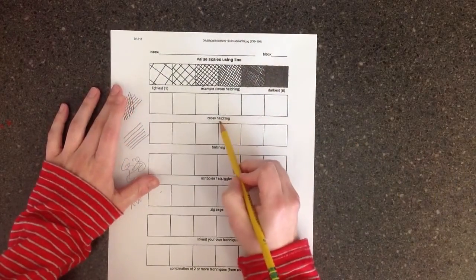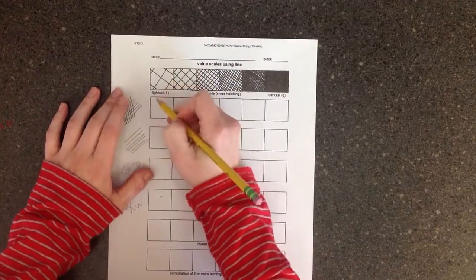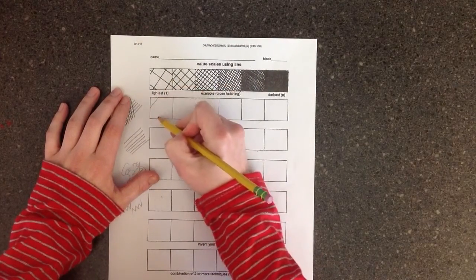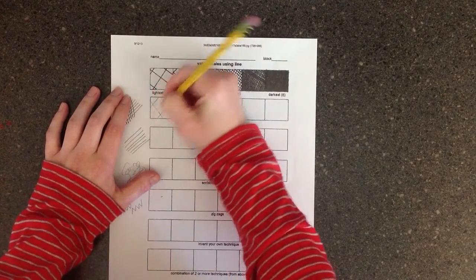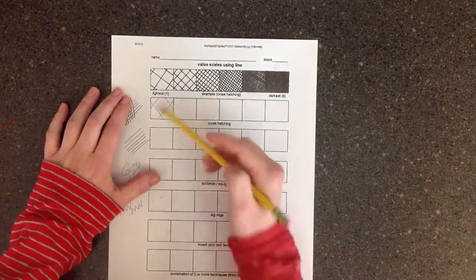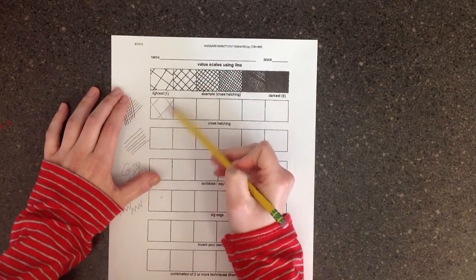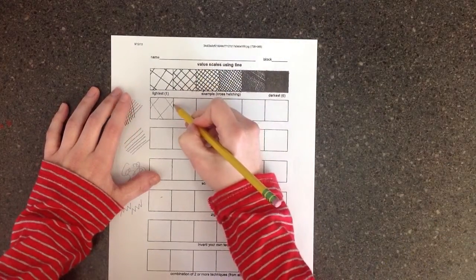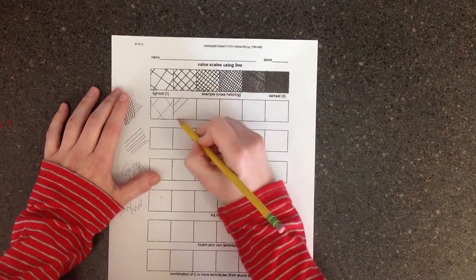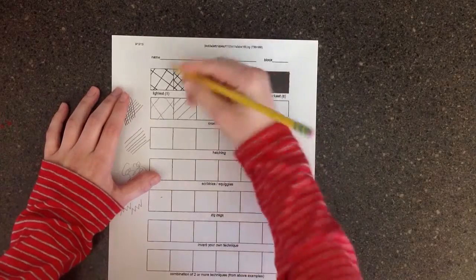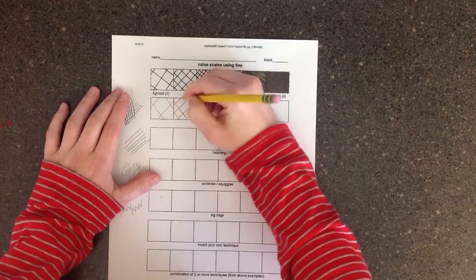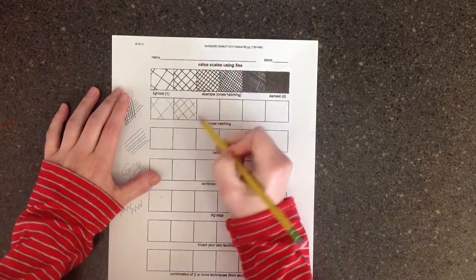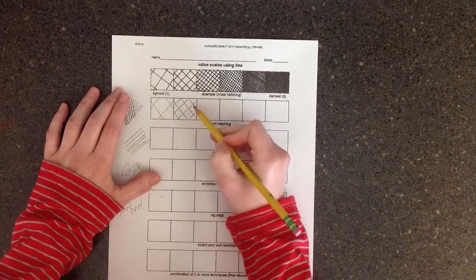So for the first one, which is cross-hatching, the lightest is going to be farther apart. I've got my set of lines going one way and then another set going in another direction. And then I want to start getting darker in my value, so I'll start putting the lines closer together. So now I have more lines and they're closer together.